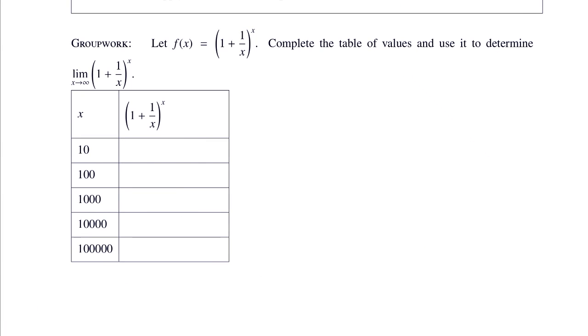All right, if you check these, these are what I got: 2.5937, 2.7048, 2.7169, 2.7181, and 2.7183, and the calculator rounded to a 3. It's actually supposed to be a 2 and then another 8 or something like that.